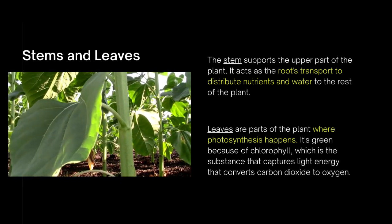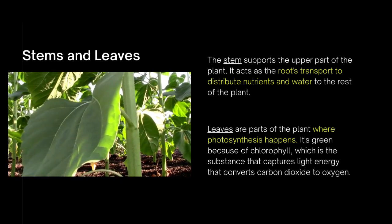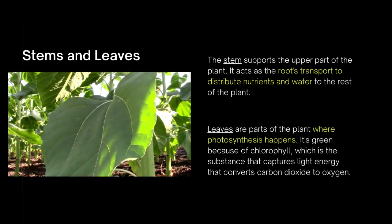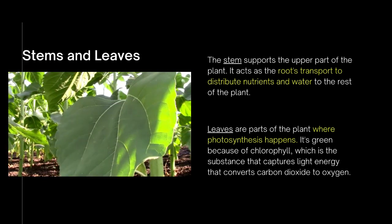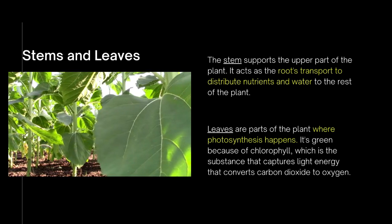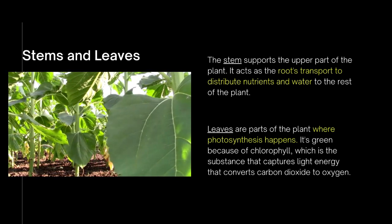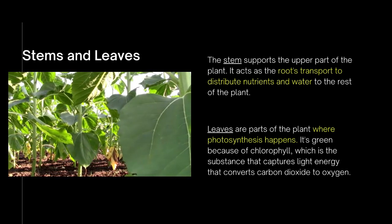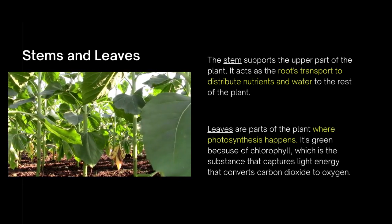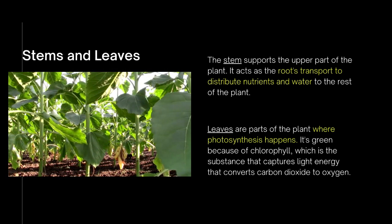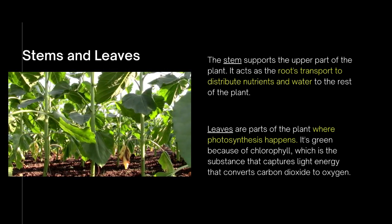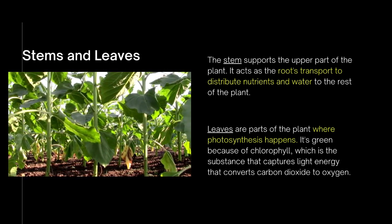The leaves are the part of the plant where photosynthesis happens. This is a process where plants produce their food. Leaves are green because of chlorophyll, which is the substance that captures light energy and converts carbon dioxide to oxygen.